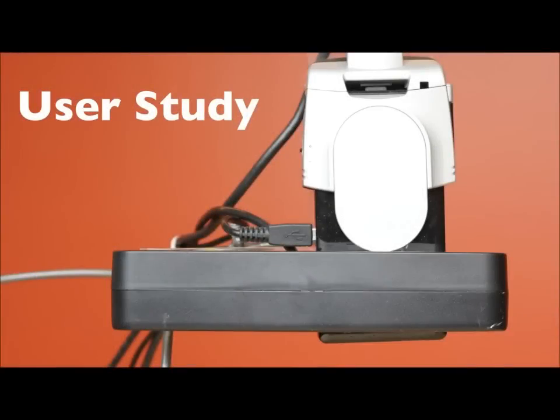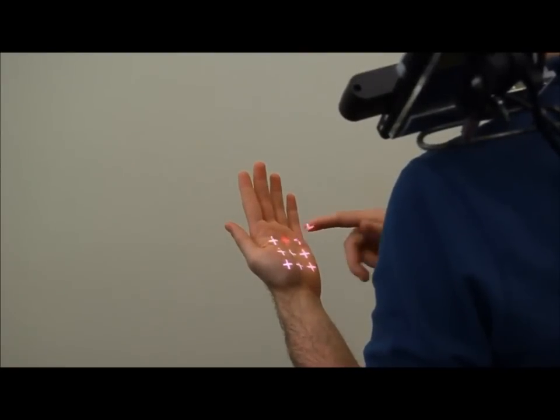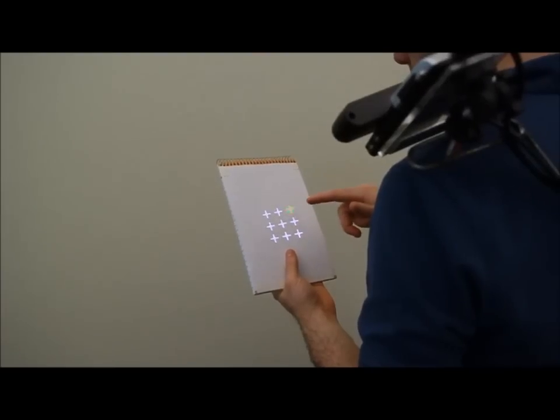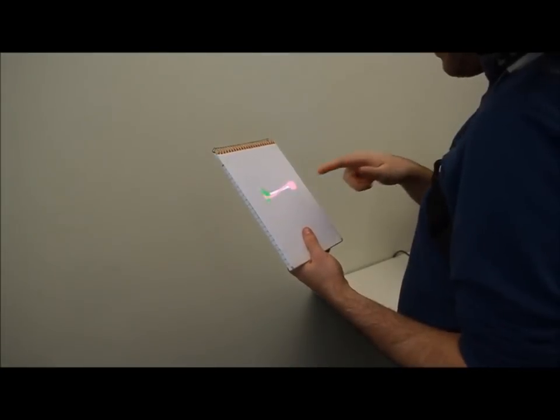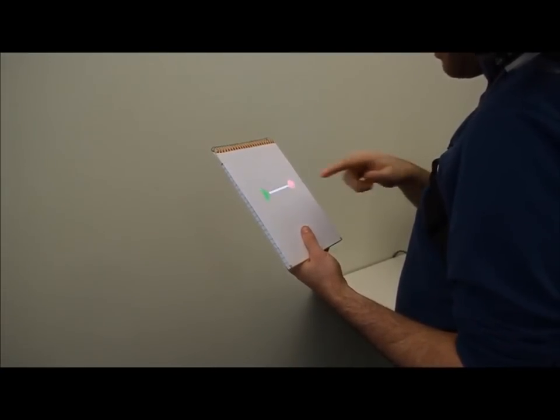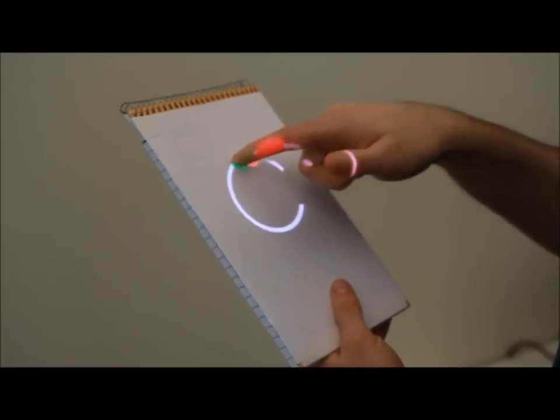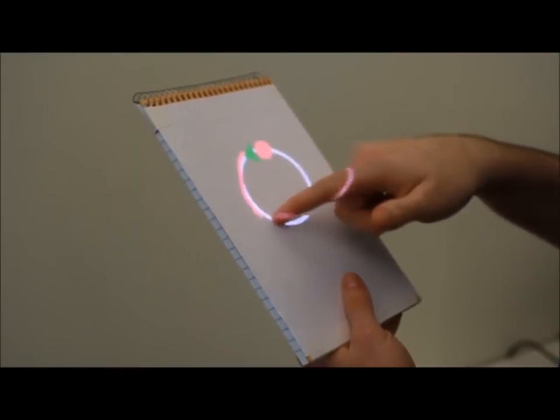To evaluate the performance of our system, we conducted a user study. Participants completed crosshair clicking trials on the hand, arm, pad, and wall. To investigate dragging performance, participants also completed a series of drawing tasks. The results suggest our prototype system approaches the accuracy of conventional physical touchscreens, but on arbitrary, ad hoc surfaces.